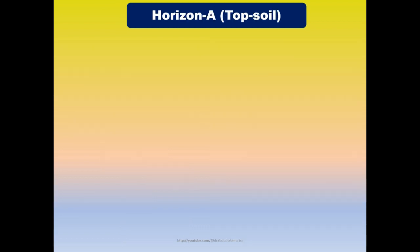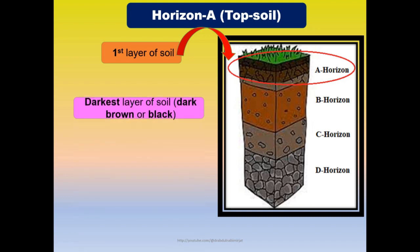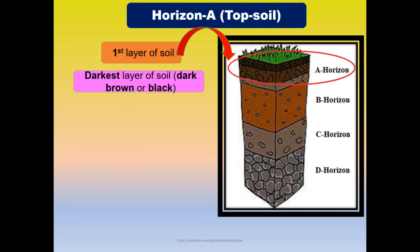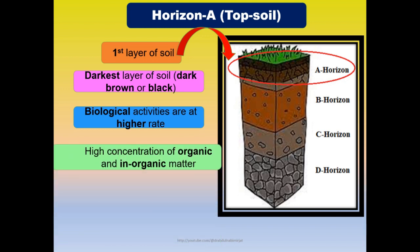Characteristics of horizon A: Soil horizon A is also called topsoil. This is the first layer of the soil. It is the darkest layer, dark brown or black in color. Biological activities are at a higher rate. There is a high concentration of organic and inorganic matter, and there is presence of living organisms, plant roots, and insects.